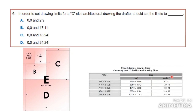Number six: to set the drawing limits for a C-size architectural drawing, what should the drafter set the limits to? Looking at the paper size chart, a C-size architectural drawing has dimensions of 18 by 24 inches. You can find these measurements on the chart — 18 inches for one side and 24 inches for the other. These paper sizes can also be found online if needed.